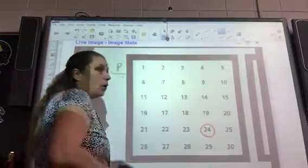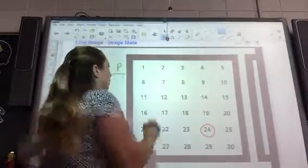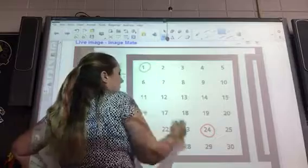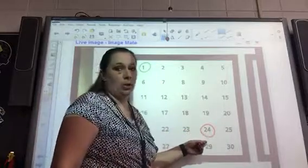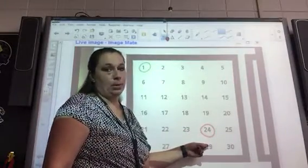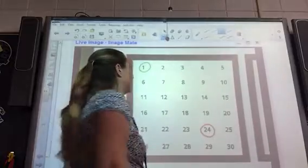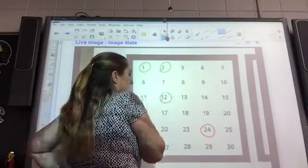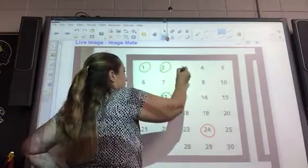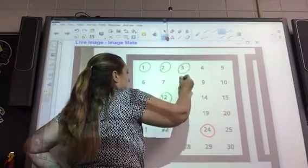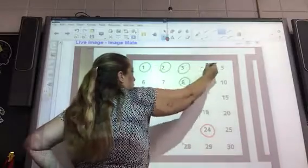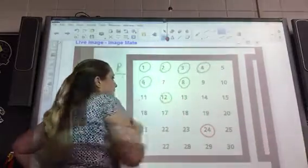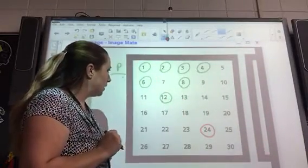My partner circles all the factors of 24. So 1 times 24, now I can't re-circle that. If it's circled, you can't put a circle on top of it, so I don't get that. But I can do 2 times 12, 3 times 8, 4 times 6, and then I think that's about it.